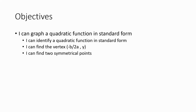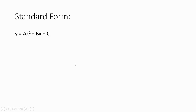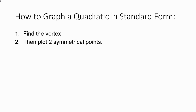We'll do some practice problems and then have some work time. This is standard form. We have our function: y equals a times x squared plus b times x plus c. If you see something like this, this is called standard form, and we can still graph our quadratic. It's a little bit harder, but we can still do it.